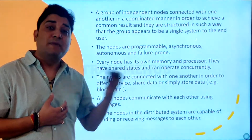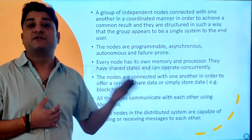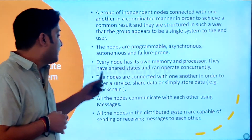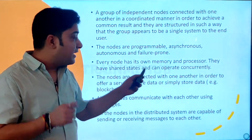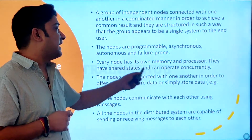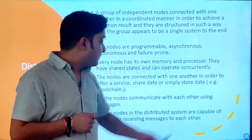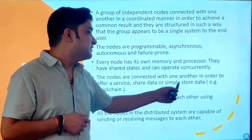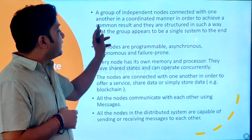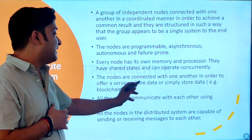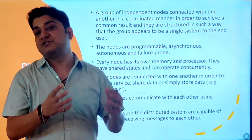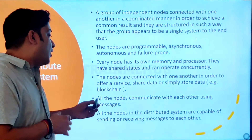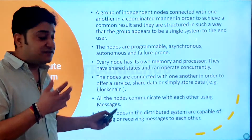Common results can also include sharing or transferring of money from a sender to a receiver. The nodes are programmable and asynchronous. Every node has its own memory and processors, they have shared state and can operate concurrently. The nodes are connected to offer a service, share data, or store data. When I say node, this can be a computer machine, a server, a clustered computer, or a cloud computing machine.